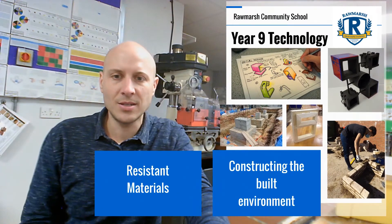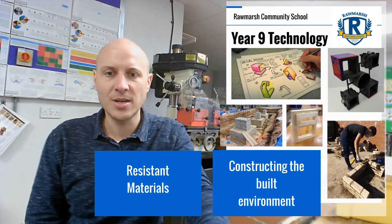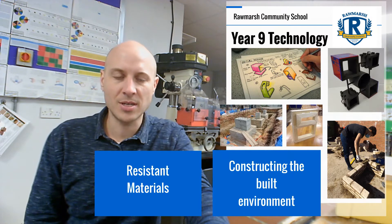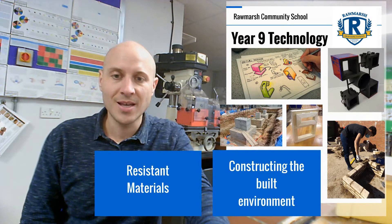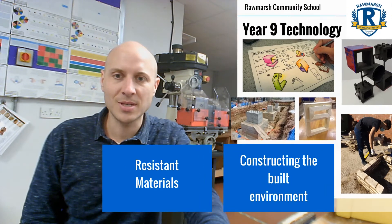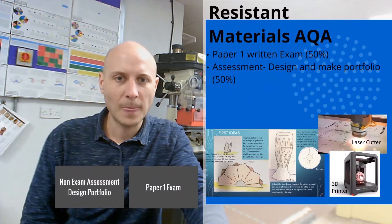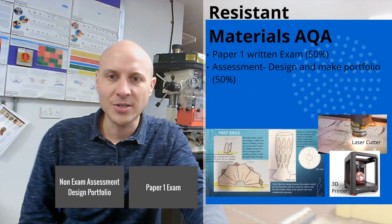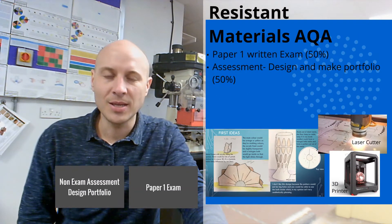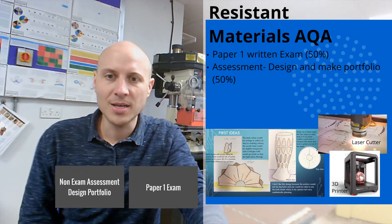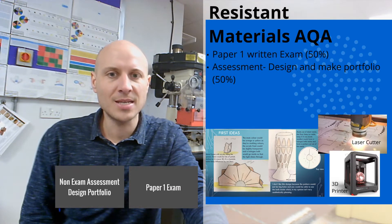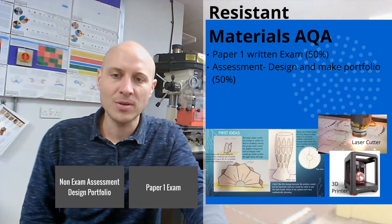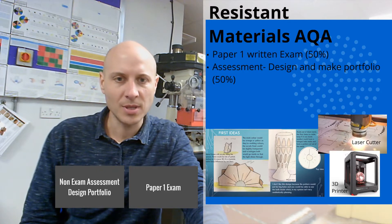Year 9 Technology is based on two subjects: resistant materials and constructing a built environment. We'll take a look first at resistant materials. Resistant materials is a GCSE offered by AQA. There are two parts: Paper 1, which is a written exam, and what we call the design portfolio, a non-exam assessment.